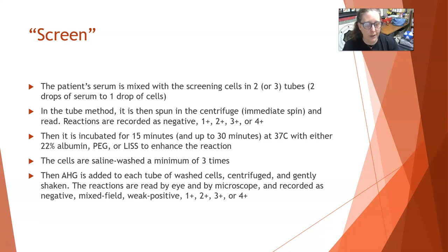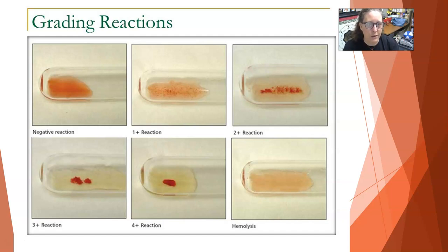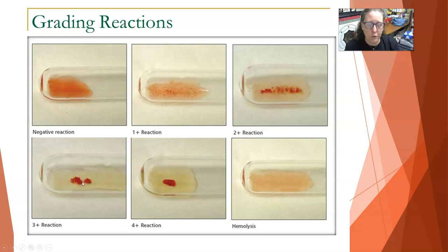For illustration: a negative reaction shows cells fully resuspended. A 1+ reaction shows small, visible agglutination. A 2+ reaction has slightly larger clumps. A 3+ reaction shows large clumps with several of them present. A 4+ reaction shows one large single clump of cells. In hemolysis, the cells have lysed and the result looks like a suspension of hemoglobin.